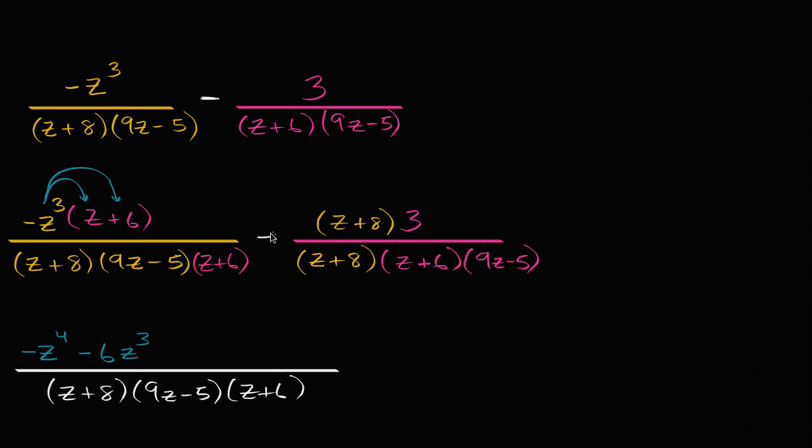And now this negative sign right over here, actually instead of saying negative of this entire thing, we could just say plus the negative of this. Or another way of thinking about it, you could view this as negative three times z plus eight. So we could just distribute that. So let's do that. So negative three times z is negative three z. And negative three times eight is negative 24. And there you go.